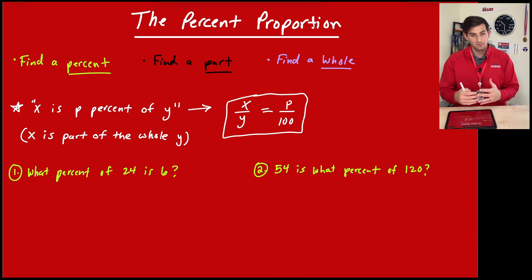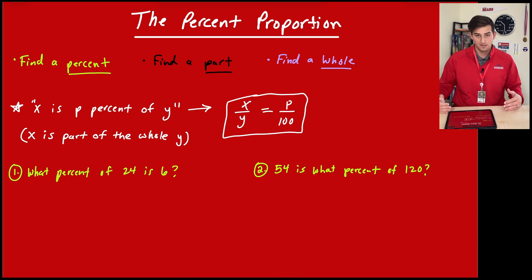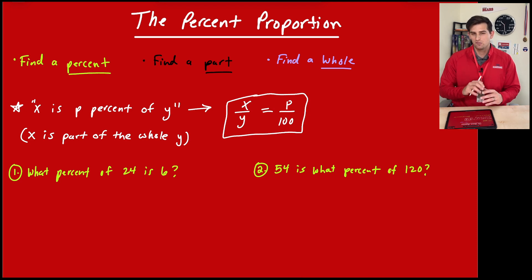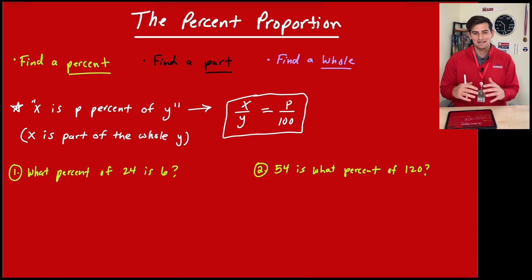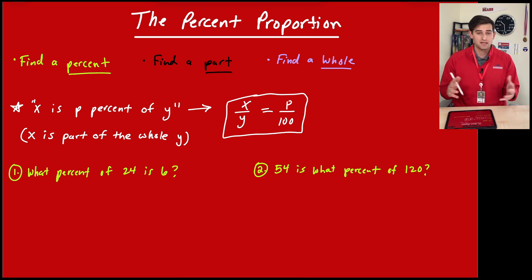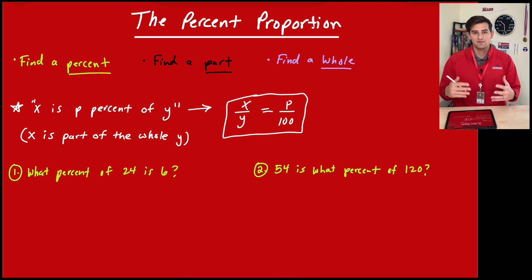Are they giving us the percent and the part? Are they giving us the part and the whole? Or are they giving us the whole and the percent? Once we've figured that out, as long as we know this proportion, we can plug those values in and cross multiply. In this video we'll probably just cross multiply — in my opinion that's the easiest. We can always cross simplify if we need to, to make the numbers a little bit easier to work with.